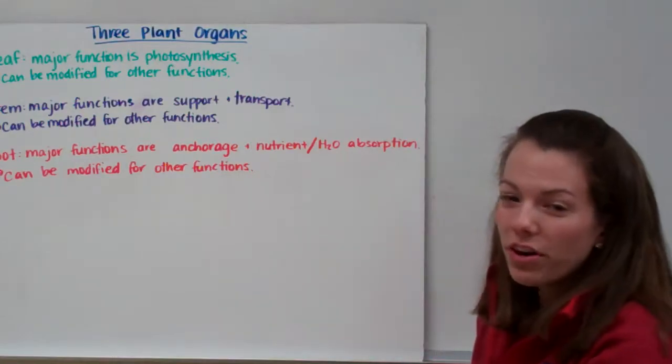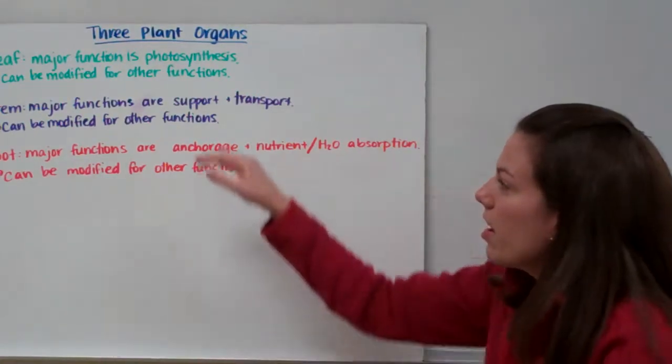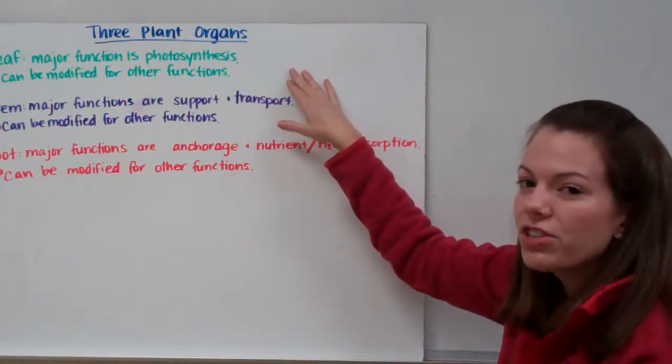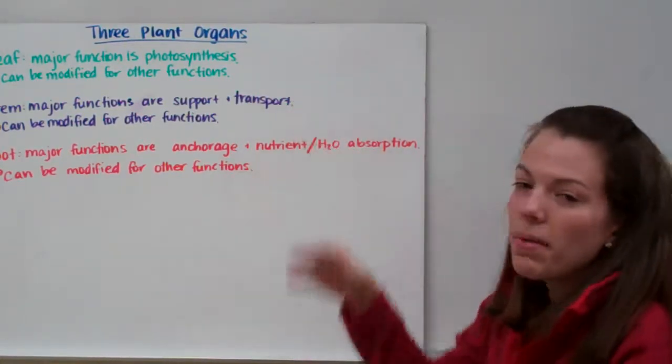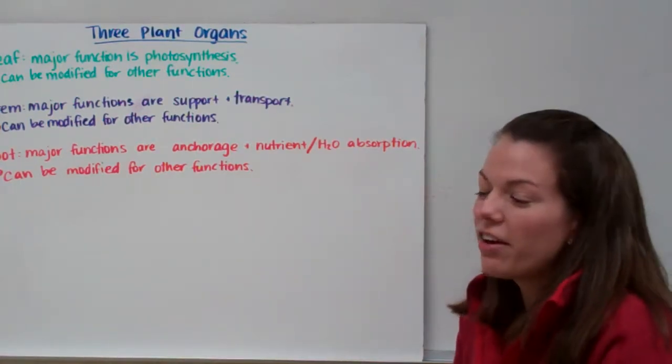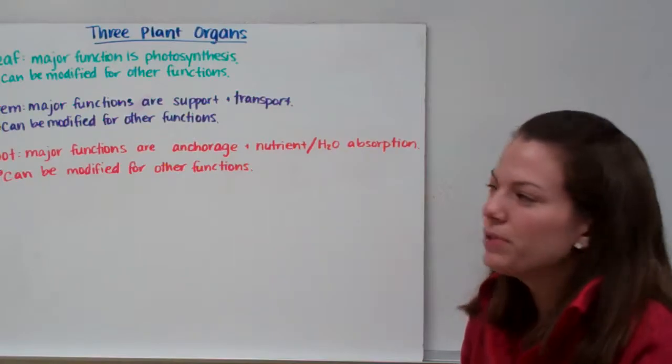We have three plant organs of which you'll be familiar. We have leaves, stems, and roots. Leaves, their major function is photosynthesis. And they can be modified for other functions. We have reproductive leaves. And some plants, like our Venus flytrap, actually use their leaves to capture food.